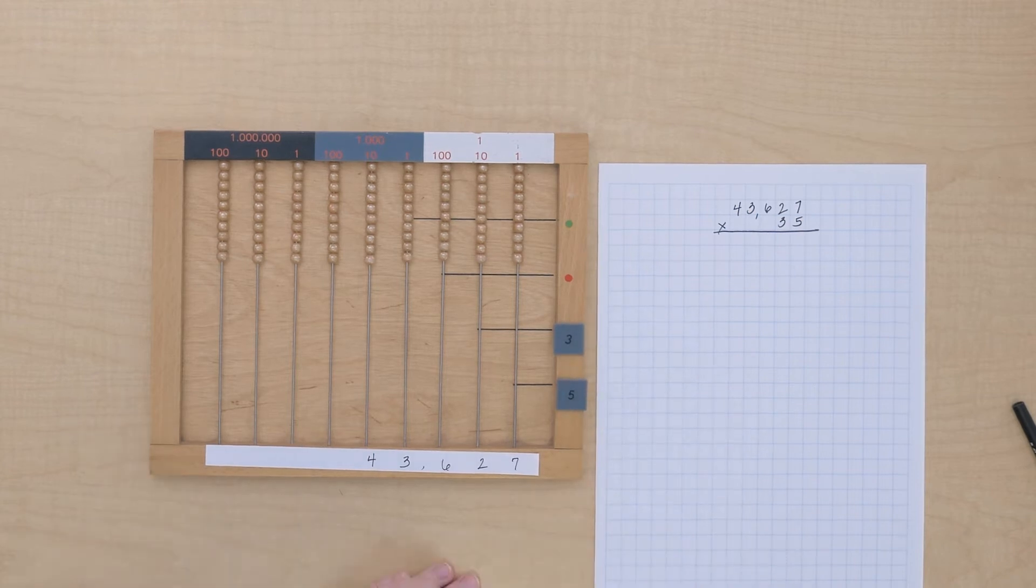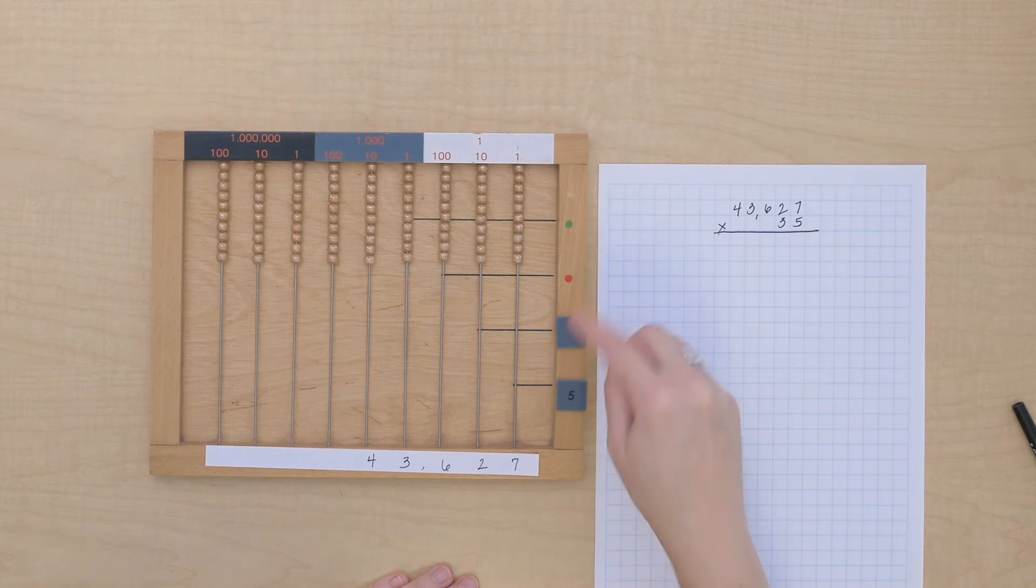Okay, we can start our multiplication just like before. 7 times 5 is 35.